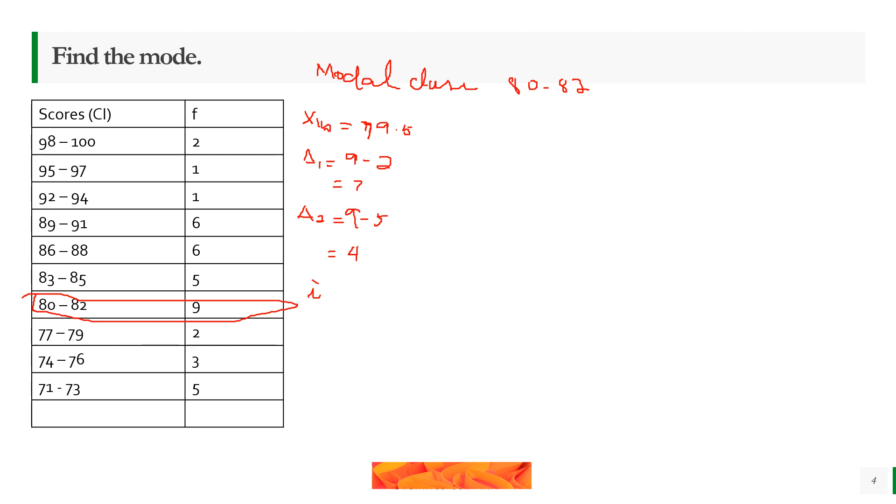Another thing we need to find is the i, the class size. 71, 72, 73 - there are obviously 3. Using the formula, x-mode equals xLB plus delta 1 over delta 1 plus delta 2, times i.